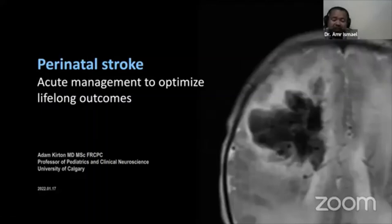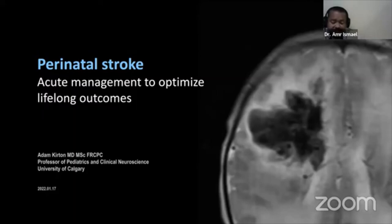He served as the inaugural chair and vice president of the International Pediatric Stroke Organization at internationalPediatricStroke.org. Dr. Curtin directs the Calgary Pediatric Stroke Program, the Alberta Perinatal Stroke Project, the University of Calgary Non-Invasive Neural Stimulation Network, and the ACH Brain Computer Interface Laboratory. Let's welcome Dr. Adam Curtin.